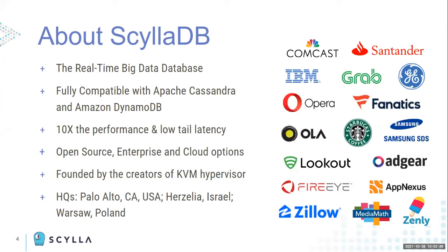Scylla comes in three main variants. First is the open source version — you can download the code from GitHub or get a binary Docker image. Second is Scylla Enterprise, a closed-source project where 95% of the code is shared with open source, and it adds unique features around security, workload prioritization, and compaction strategy. Third is Scylla Cloud — a fully managed Scylla Enterprise version running on either our account or your AWS account, available on AWS and GCP, with 24/7 monitoring.